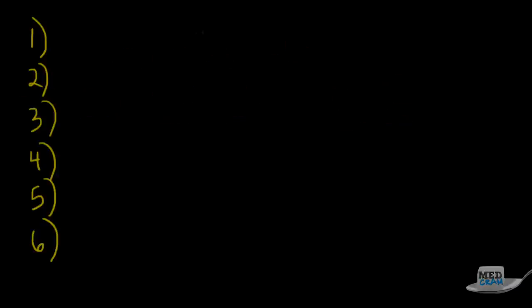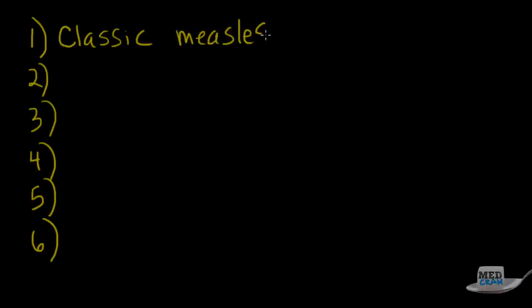Just to be complete, there are six different clinical syndromes that the rubeola or measles virus can cause. The first one is the classic type of measles, otherwise known as classic measles. We're going to talk about that one more — that's your three C's, which we'll get into, and the Koplik spots, which you've heard about.